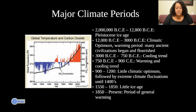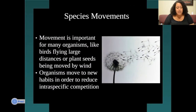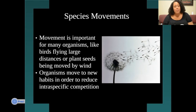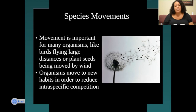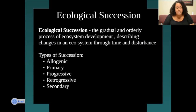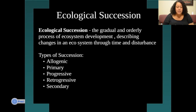Species movement is also a big topic. Movement is important for many organisms — like birds flying large distances and plant seeds being moved by the wind. Organisms move to new habitats to reduce competition, which is why birds move south during winter to warmer places because they don't have enough resources in their normal climates. Ecological succession is a gradual and orderly process of ecosystem development, describing the changes of ecosystems through time and distance. Definitely read up on the types of successions — they're important.